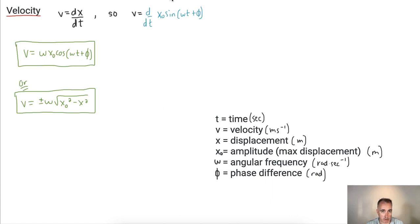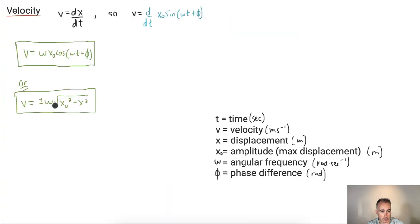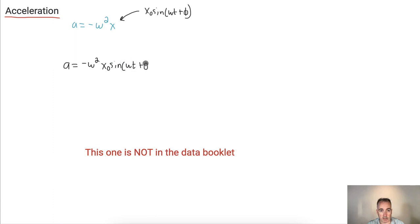We can go one step further. These equations are in your data booklet. However, acceleration is not in the data booklet, but we can figure it out. We remember that acceleration equals minus omega squared times x, and x equals x₀ sine(omega·t plus phi). So you just put it together: a equals minus omega squared times x₀ sine(omega·t plus phi). You don't need to do another derivative — just use the SHM equation and plug in x. This one is not in your formula booklet, so it's important to be able to derive it.